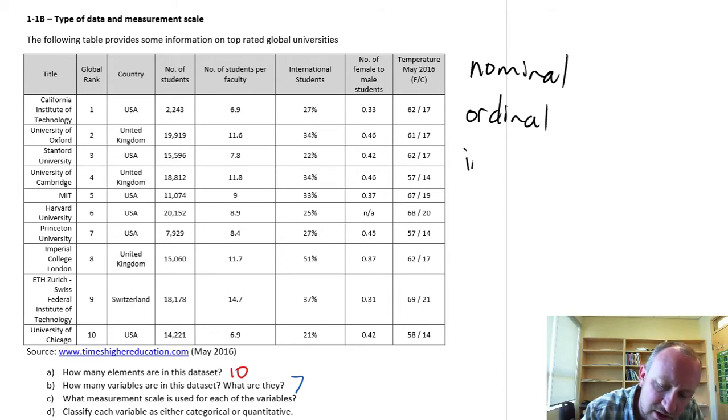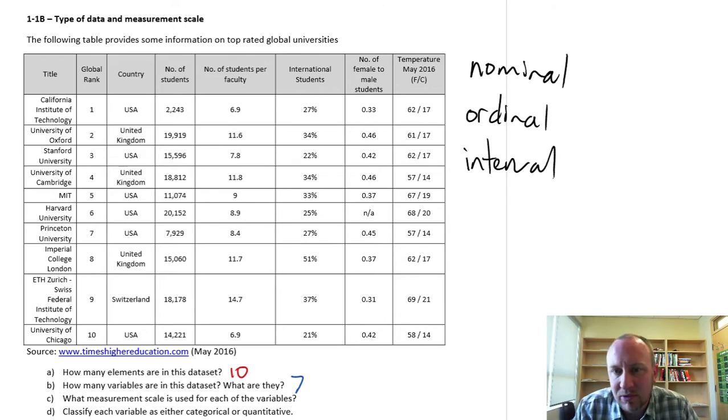An interval variable. So an interval variable now has the characteristics of an ordinal variable. Except it must be numeric. Because the most important characteristic or defining characteristic of an interval is that the difference between any two data points matters. So this one minus this one has some specific meaning and can be measured in some specific unit of measurement. So the interval, the difference has some meaning.